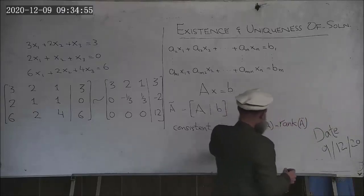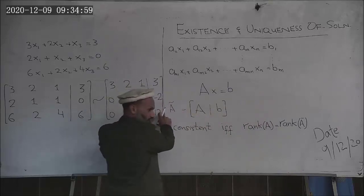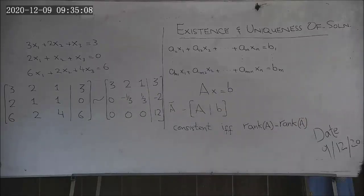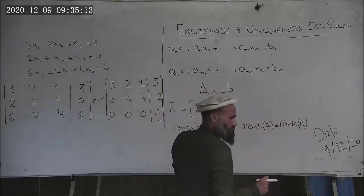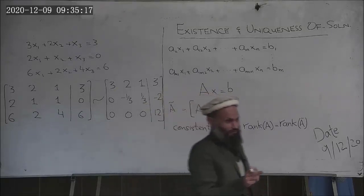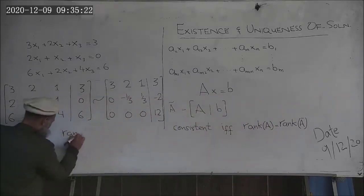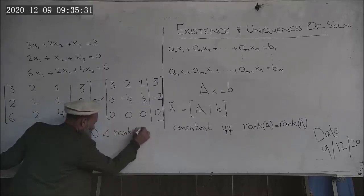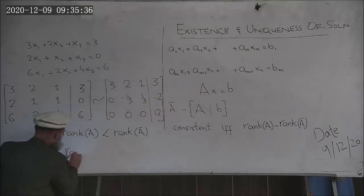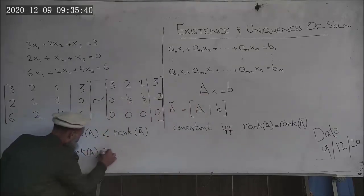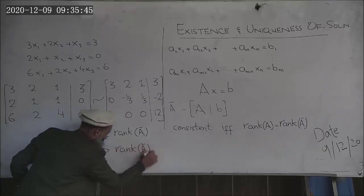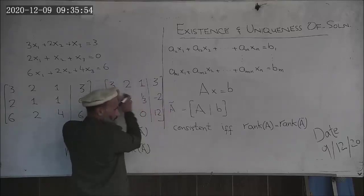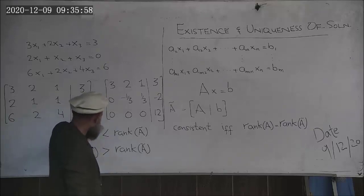So, what if rank of A is less than rank of A-tilde? Then no solution exists. We have three possible situations. First: rank of A less than rank of A-tilde. Second: rank of A equal to rank of A-tilde. Third: rank of A greater than rank of A-tilde — but this third situation is not possible, because A-tilde has one additional column, so its rank cannot be less than that of A.